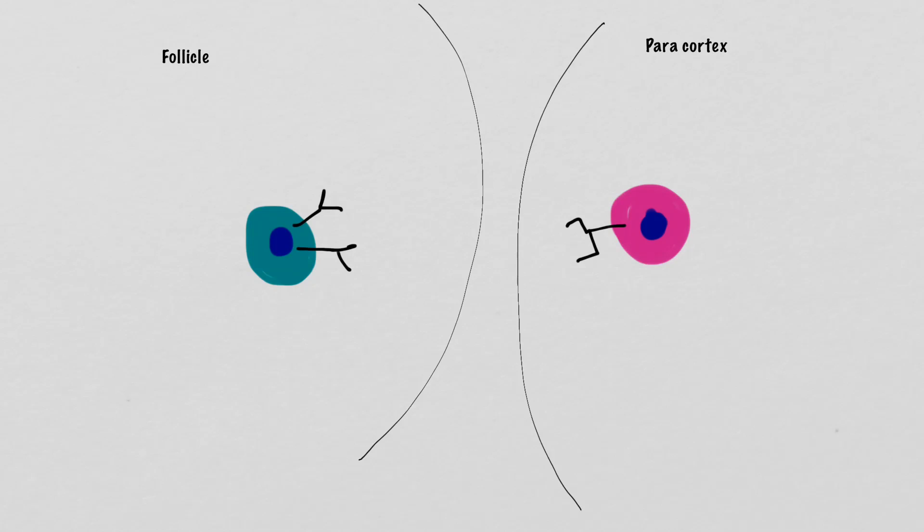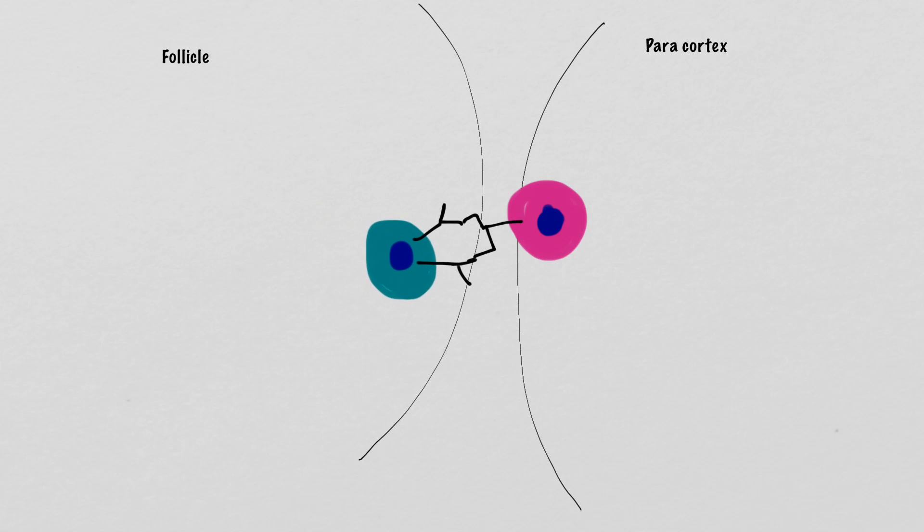So let's think back to B-cell priming. During B-cell priming, the T-cells move through the paracortex, always getting closer to the follicle, where follicular B-cells may also move closer to the paracortex, and they meet in the middle so that the B-cell can potentially get some help from the T-cell.